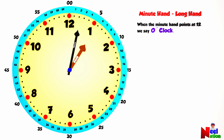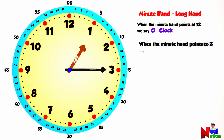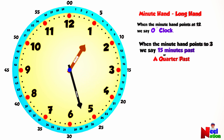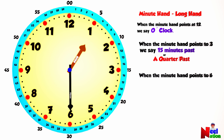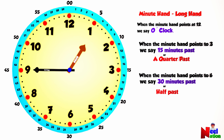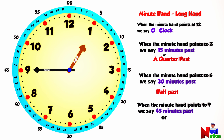Let's read it one more time. When the minute hand points to 3, we say 15 minutes past or a quarter past. When the minute hand points at 6, we say 30 minutes past or half past. When the minute hand points to 9, we say 45 minutes past or a quarter to.